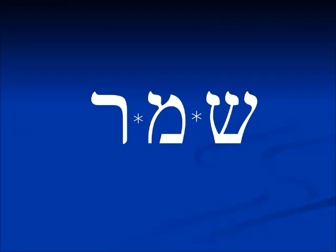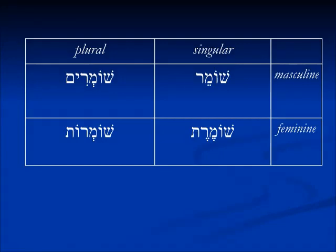We're going to start with the verb shamar — shin-mem-resh — which means to keep or to guard. It's the simplest root where all the letters are consistent. The shoresh shalem, or full root, sometimes called gezera shlema, means that none of the letters ever change — they're always consistent in the conjugation. For the masculine singular participle of a pa'al verb, we have the shin that's part of the root, then we have the cholem. In modern Hebrew the vav will appear; in biblical Hebrew it probably will not. That cholem plus the tzere under the next letter, the mem — that is what defines the present tense masculine singular of a pa'al verb. It's pronounced shomer.